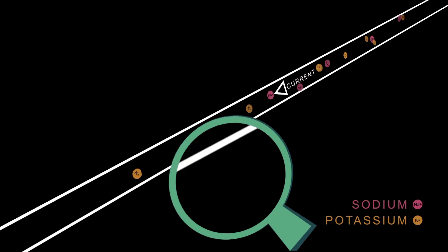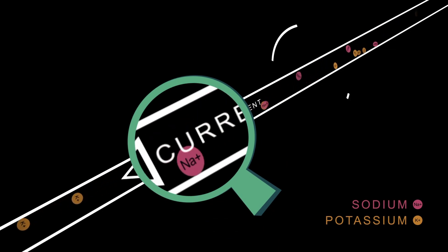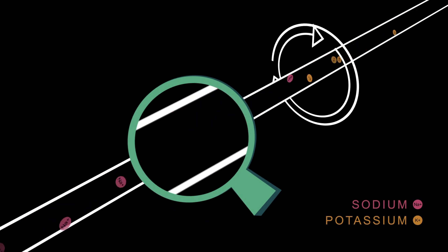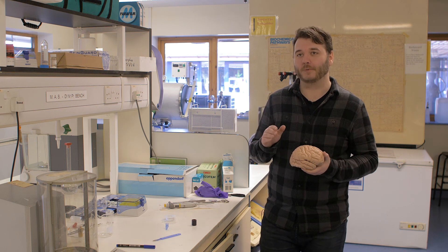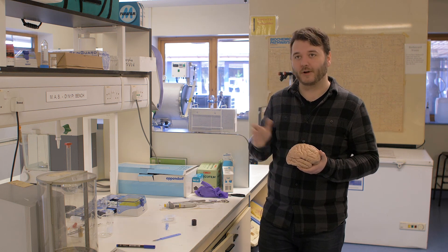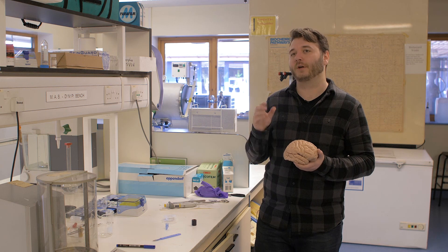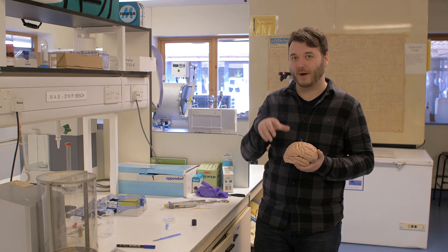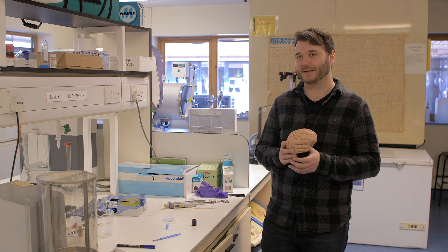What you find is when an electrical current passes down a wire, it generates a tiny magnetic field. Now these magnetic fields are quite useful because they're not distorted as they pass through the skull, which means that if we can detect them, we can be quite accurate in locating where they came from. And it's these magnetic fields we're interested in.